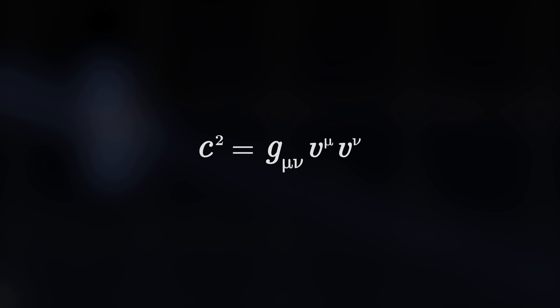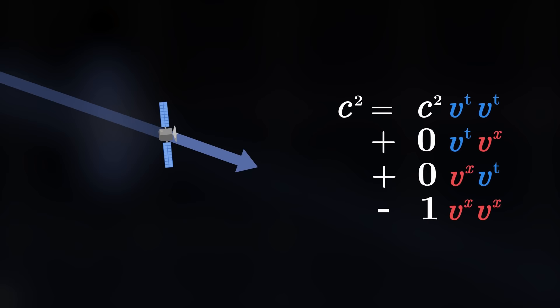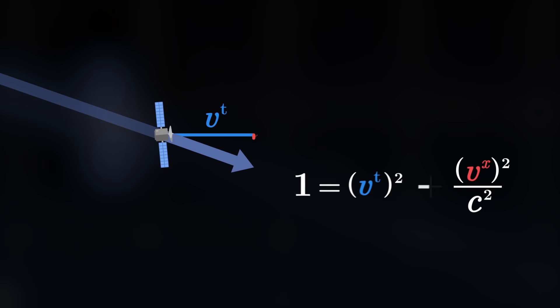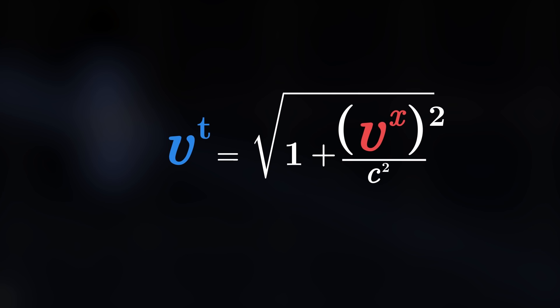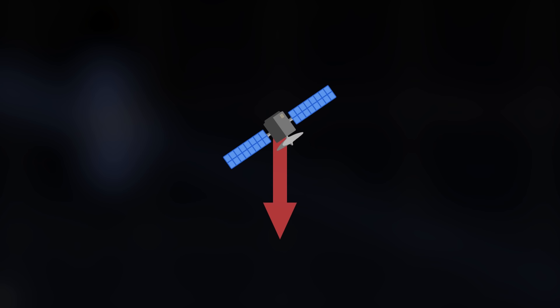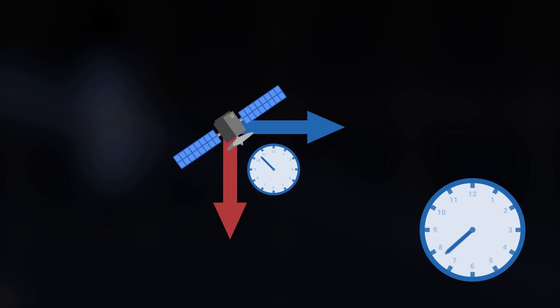A first prediction that we make with this metric is the phenomenon of time dilation. To do this, we remember our previous equation, which related the norm of the velocity to its components. Using this equation for the satellite, we can express its temporal speed as a function of its spatial speed. This value is greater when the satellite moves faster through space. This means that the faster the satellite moves through space, the faster our time will pass compared to its proper time. The faster an object moves through space, the more its proper time slows down compared to our time.